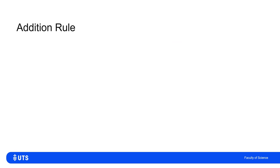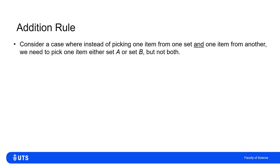Now consider a slightly more complicated case. For the Mr. Potato Head situation, I had to pick one set of feet, one nose, one hat, and so on — exactly one element from each set. Here we consider the case where I have to pick from either one set or another, but not both — picking from set A or set B, but not both. For Mr. Potato Head, this would be the number of configurations where he either has a hat or shoes, but not both.